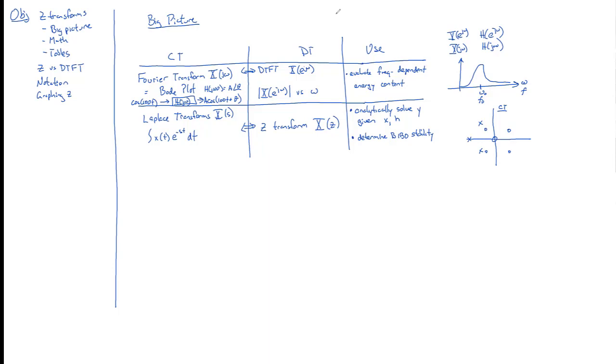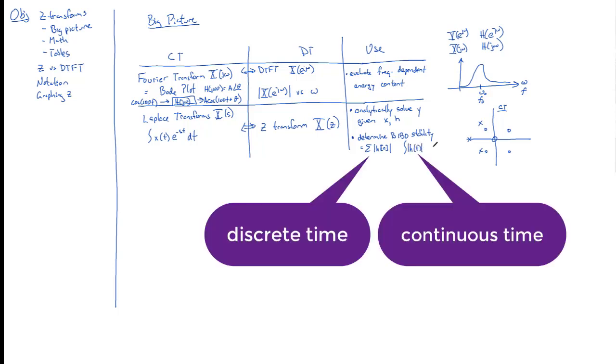So the rule is that BIBO stability, it's been a while, there's a number of ways to consider it. One is if your sum of the impulse response, whether H of, I've done it as a summation here, but otherwise it would be an integral of magnitude of H of T, either one. But if this is less than infinity, if it's finite.